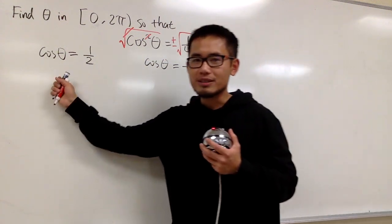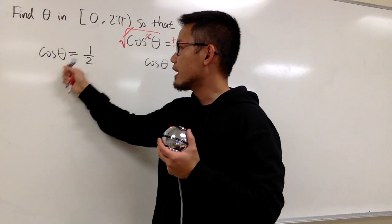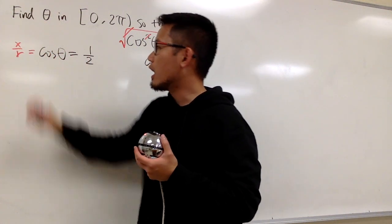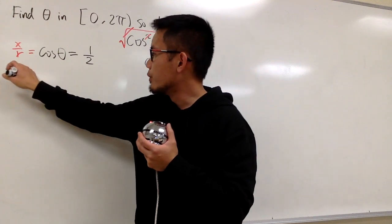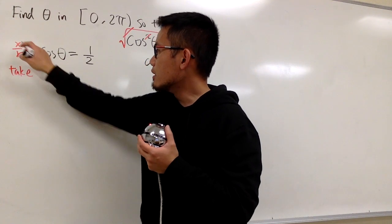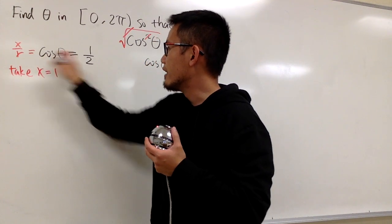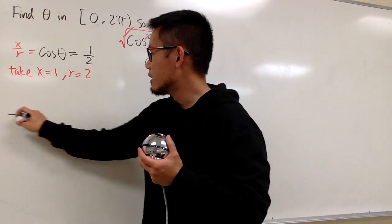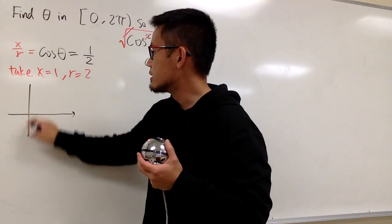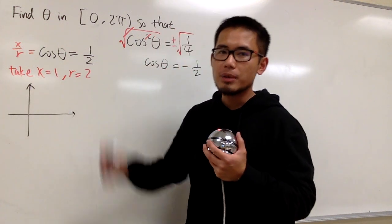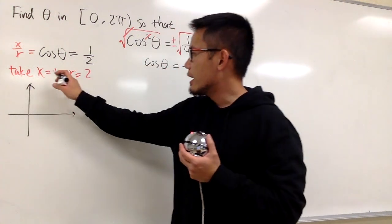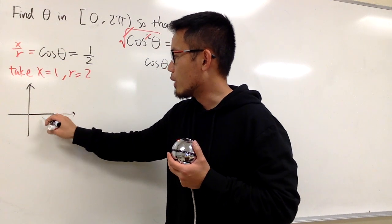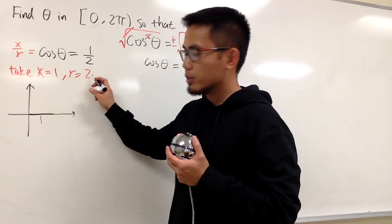Let's focus on this one first. Cosine theta to be 1 half, and we know cosine is x over r. From here, we can take x to be 1 and r to be 2. And we can just go ahead, draw our reference triangle based on this information. x is equal to 1.